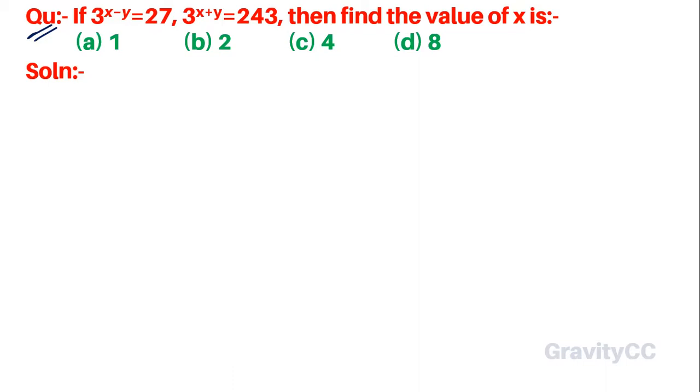The question is: if 3 to the power x minus y equals 27, and 3 to the power x plus y equals 243, then find the value of x.